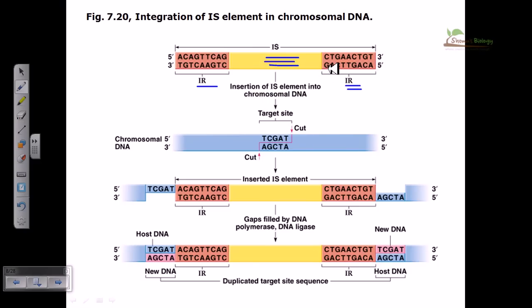With the help of these repeats, this part of the IS element can easily be attached to the target site of the chromosomal DNA of the bacterial cell. Here we have this particular special location where this IS element is to be incorporated.